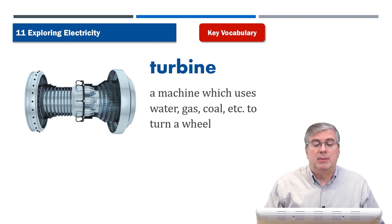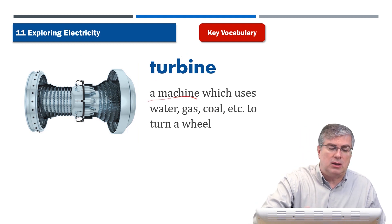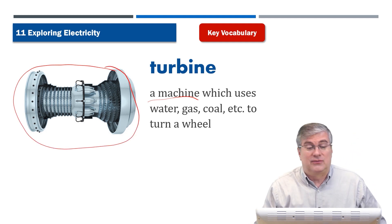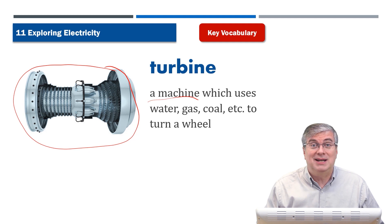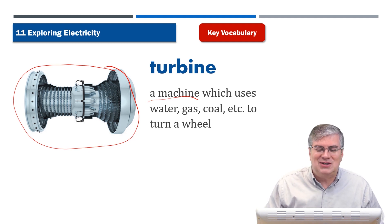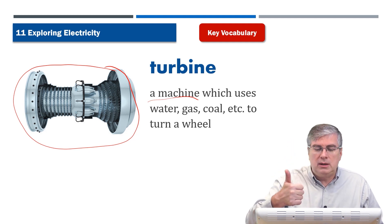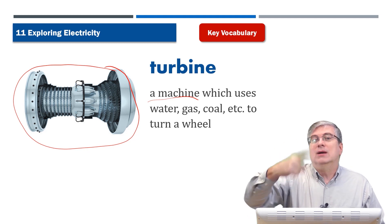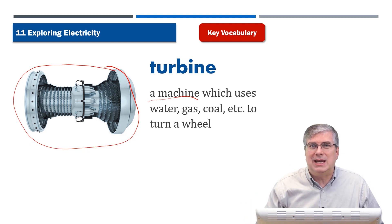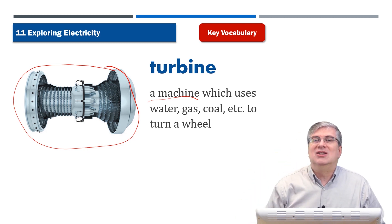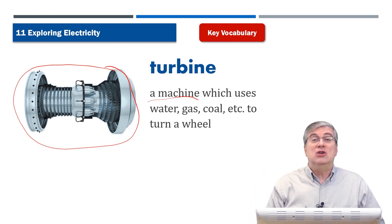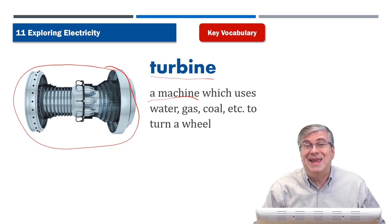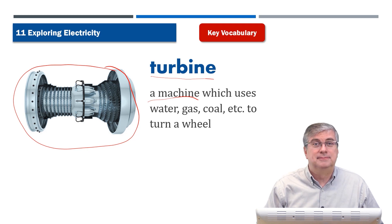Next we have 'turbine.' A turbine is a machine — look at this machine, it's really big and looks very complicated, almost like something from a science fiction movie! A turbine uses water, gas, or coal to turn a wheel. As we'll see in the reading, when you turn that wheel you can generate electricity, so a turbine is very important for making electricity.